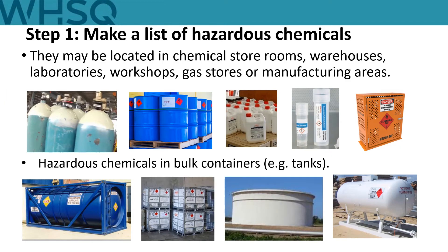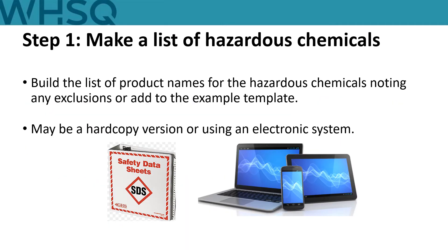There are four easy steps to creating your register. Start by making a list of all the hazardous chemicals in your workplace. Do a survey and include full and partially full containers. You may find them across your workplace in workshops, chemical storerooms, warehouses, laboratories, gas stores and manufacturing areas. Containers may be relatively small packages measured in millilitres up to bulk containers holding thousands of litres. You may choose to keep the list as a hard copy and attach the SDS, which may be practical if you only have a few products. For a mobile workforce or a large workplace with many hazardous chemicals, consider using a computer database as a practical solution.